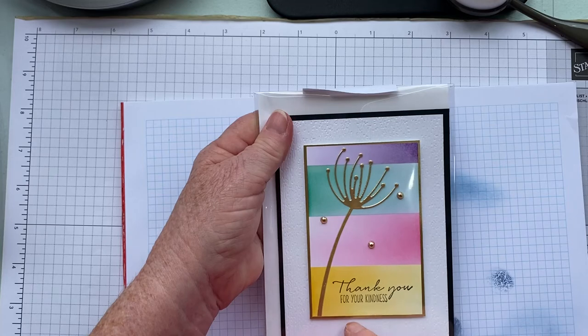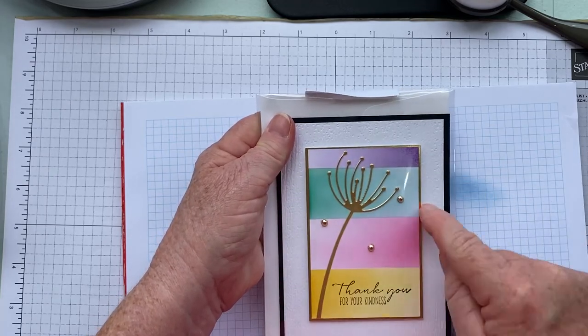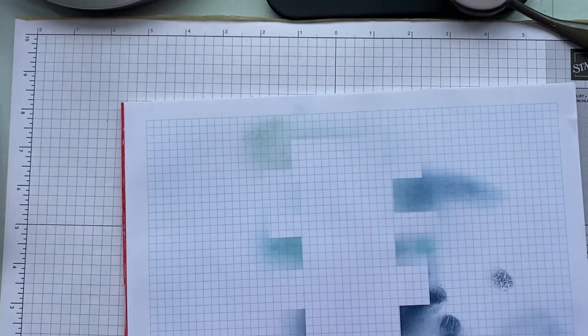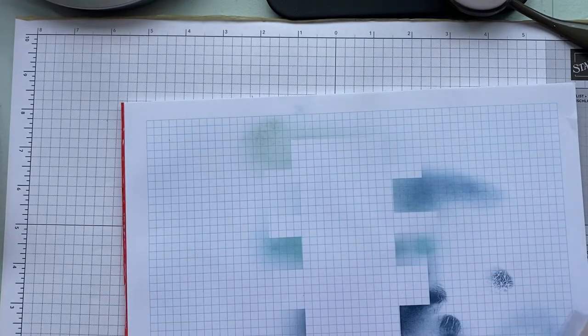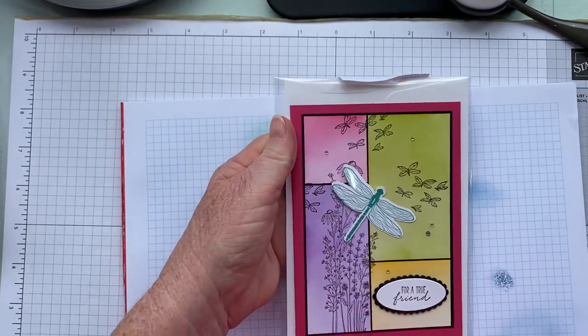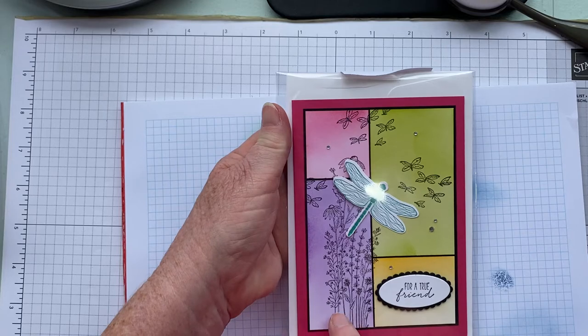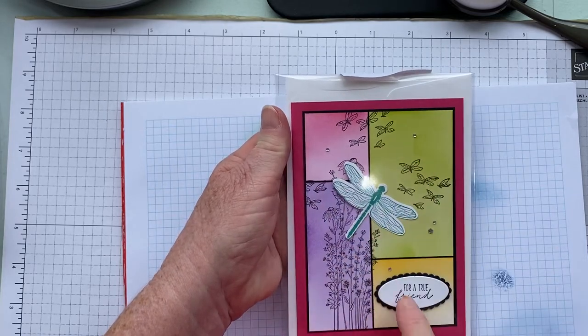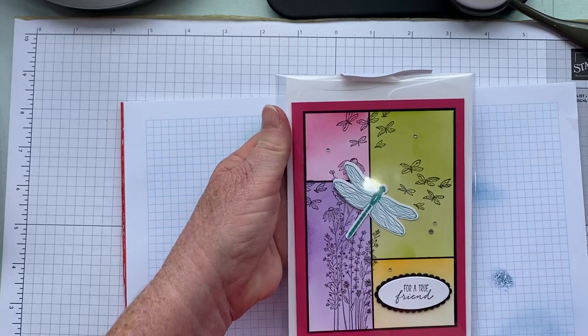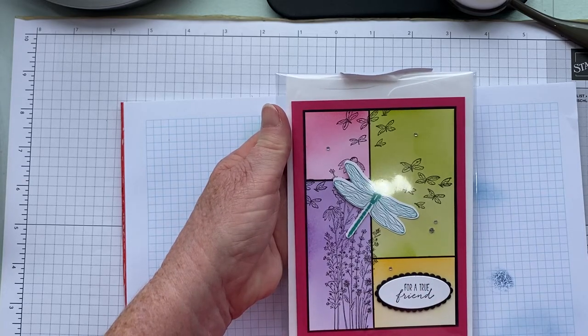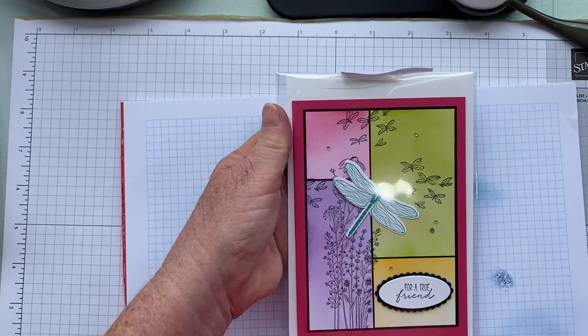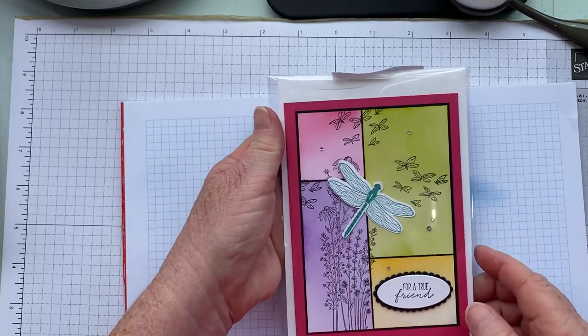Then we've got this one. This was the first one I did, so that's again color blocking. I've just cut a piece of basic white into strips, and I think I stamped first, cut it, and then put it back together. So that's that one.